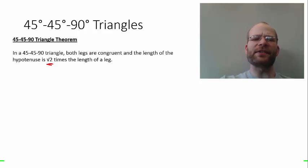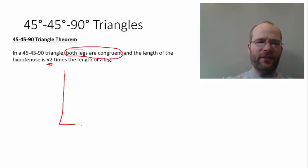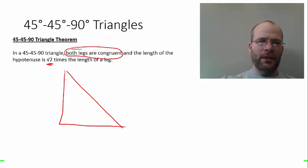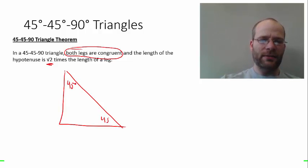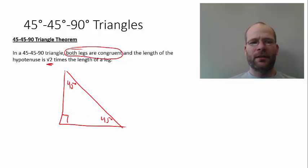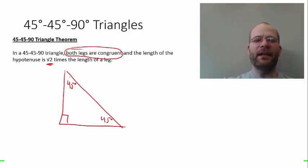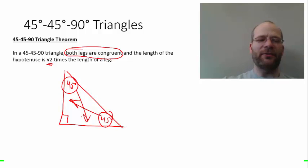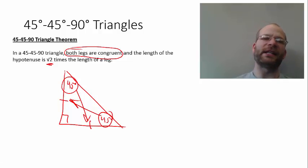Let's talk about this first piece — that both legs are congruent. We look at a 45-45-90 triangle and note that these angles are 45 degrees each and this is 90. We know by the converse of the isosceles triangle theorem that because these angles are congruent, the sides opposite those angles must be congruent as well. So we know it's an isosceles triangle.